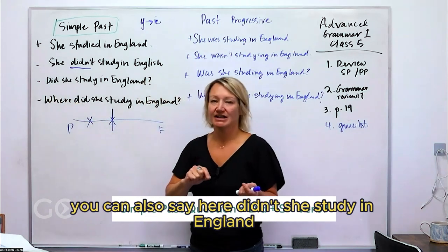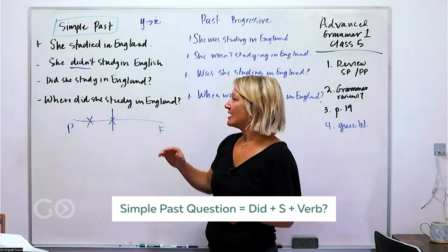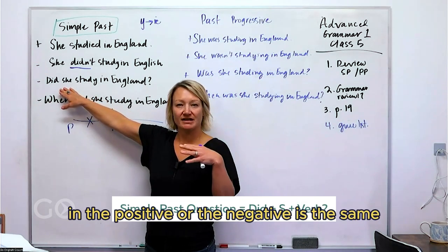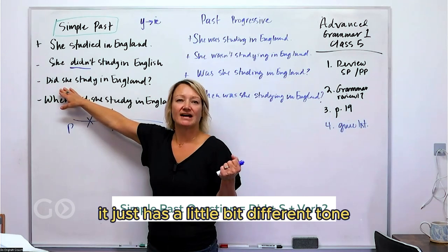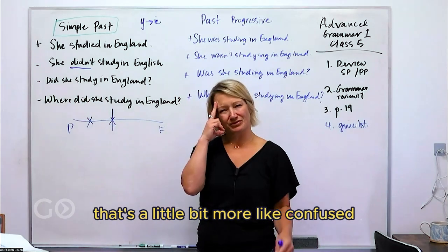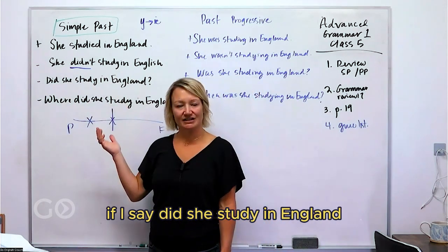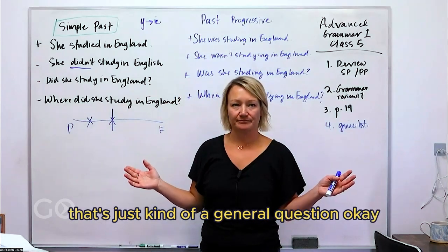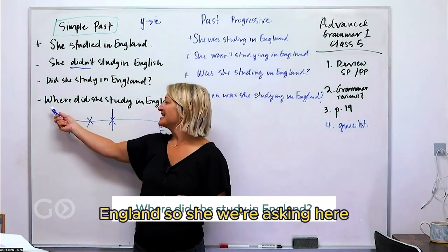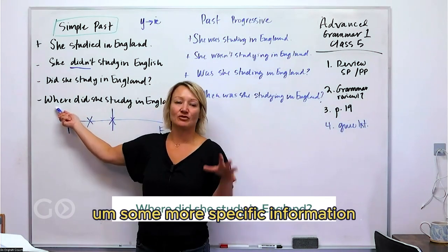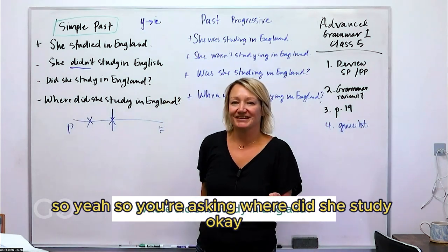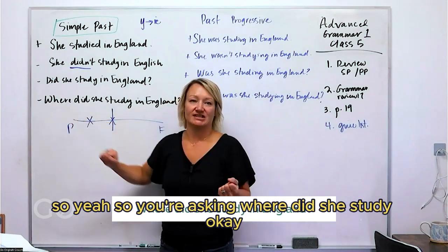You can also say 'Didn't she study in England?' — a negative question. The meaning of the positive and negative question is the same; it just has a different tone. 'Didn't she study in England?' is more like you're confused, while 'Did she study in England?' is just a general question. And then 'Where did she study in England?' is the WH-form, asking for more specific information.